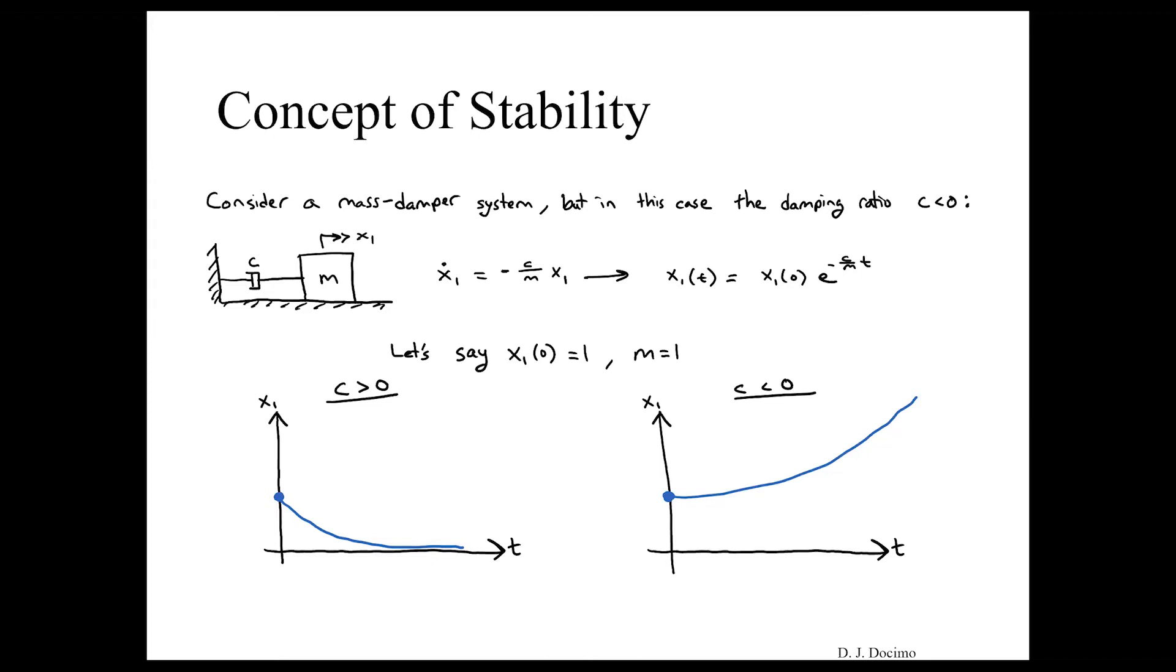Now what will happen if our damper has a value of greater than zero? Well we'll have this exponential decay as we normally do. What happens if its value is less than zero? Well in that case it's like it's putting in extra energy into the system even though it should be dissipating it.